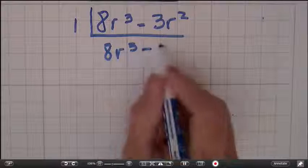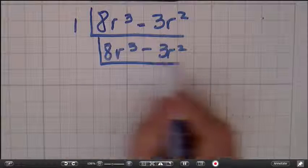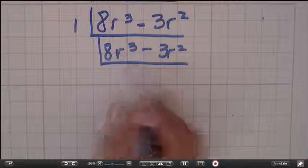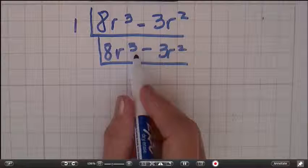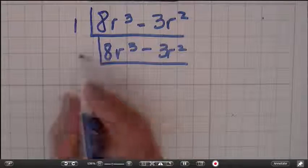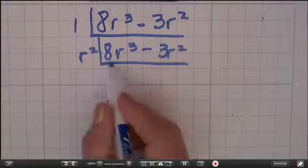So we're going to go ahead and put that 1 down. In the past we didn't always put the 1 down, now we're going to. Now we're looking at the variables r squared and r cubed. r squared has 2 r's, r cubed has 3 r's, so what they have in common are the 2 r's.